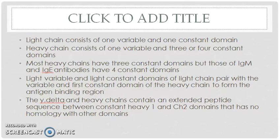The light variable and light constant domains of the light chain pair with the variable and first constant domain of the heavy chain to form the antigen binding region. The gamma, delta, and alpha heavy chains contain an extended peptide sequence between the CH1 and CH2 domains that has no homology with other domains.